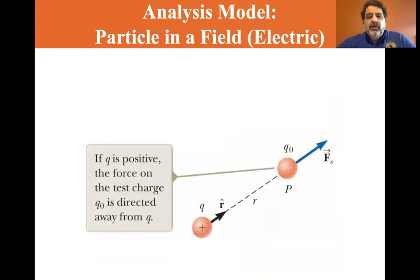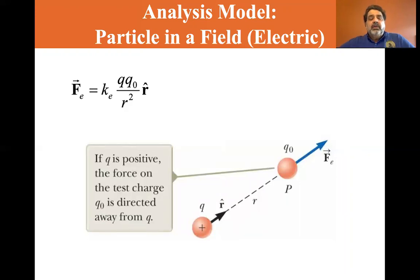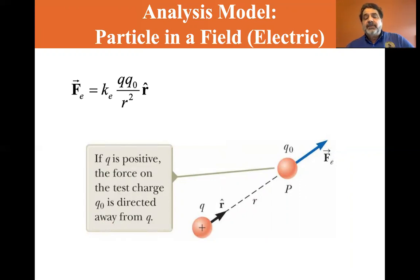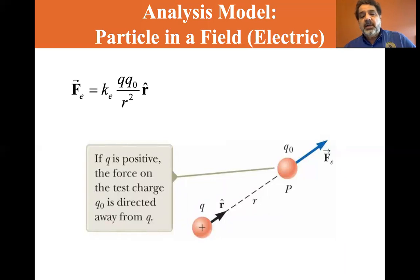If q is positive, the force on the test charge is directed away from q. Recalling Coulomb's law, the electric force is equal to k_e · q · q₀ / r², directed along the unit vector r̂. If q₀ is positive, it points away from q; if q₀ is negative, it points toward the positively charged point q.